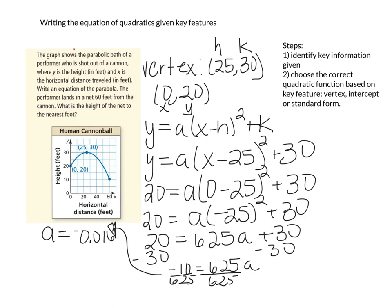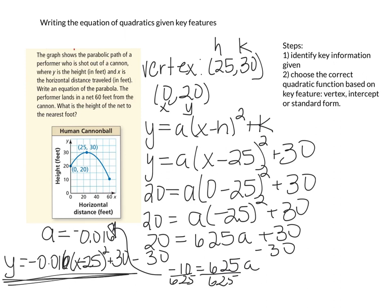So what is the equation of this parabola? y equals negative 0.016 times (x minus 25) squared plus 30. I leave x and y in the function because I'm writing an equation — and there's the equation of our human cannonball.